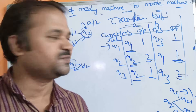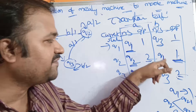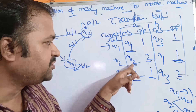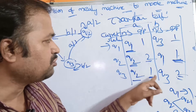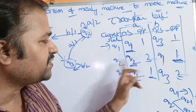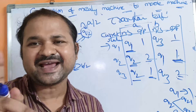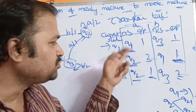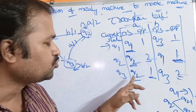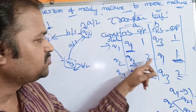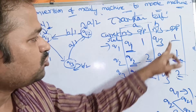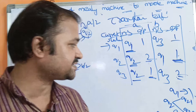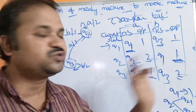The rule is simple: in a Moore machine, each state must produce only one output. Q1 has only one output value, so it remains as one state. Q2 produces two outputs, so it is split into Q2-1 and Q2-2. Q3 also produces two outputs, 1 and 2, so it is split into Q3-1 and Q3-2.